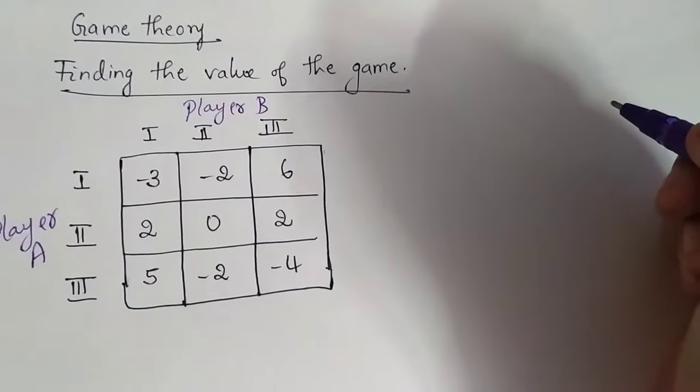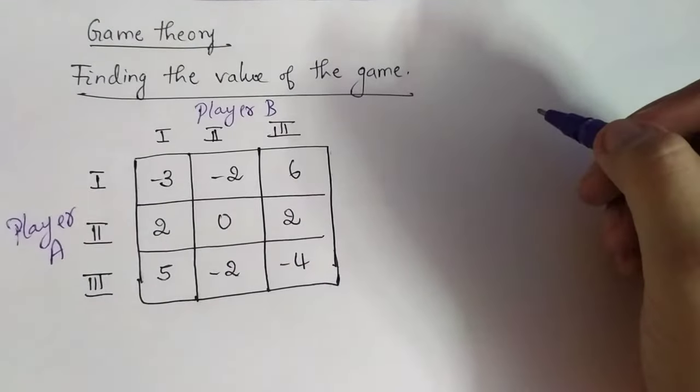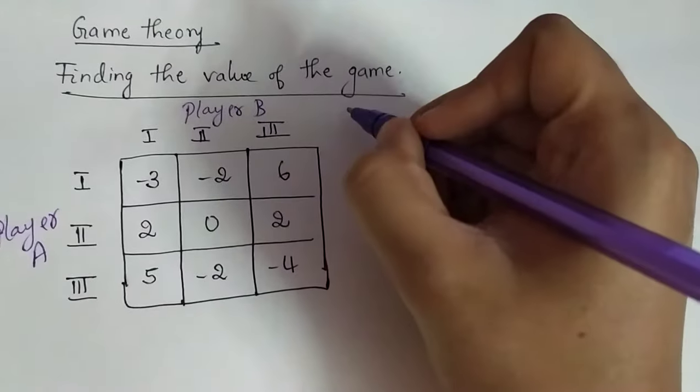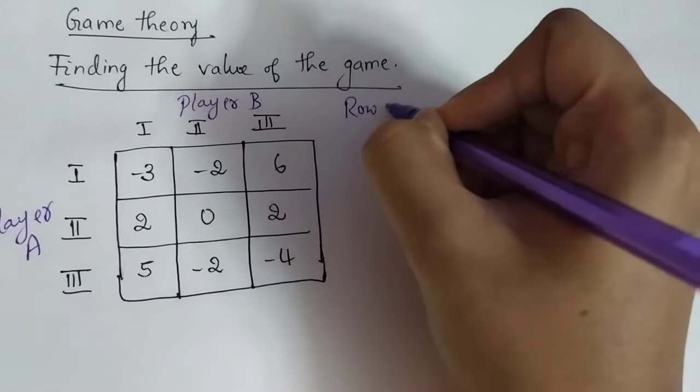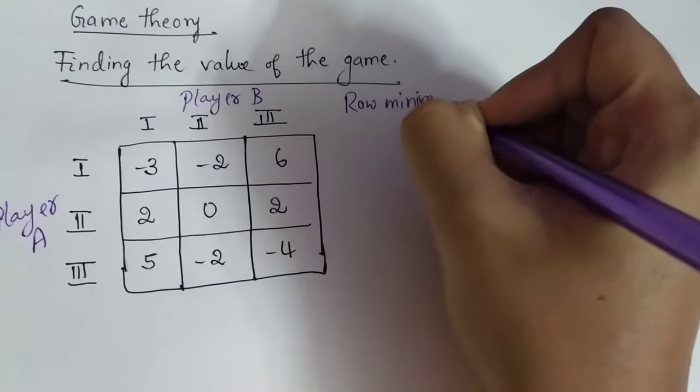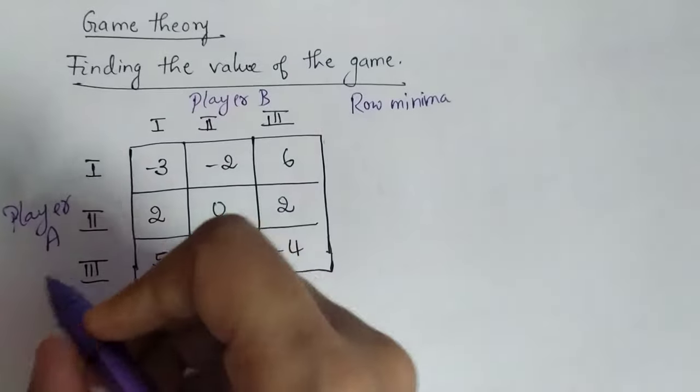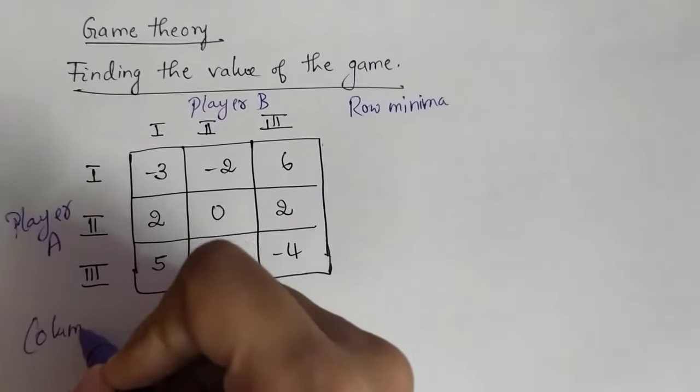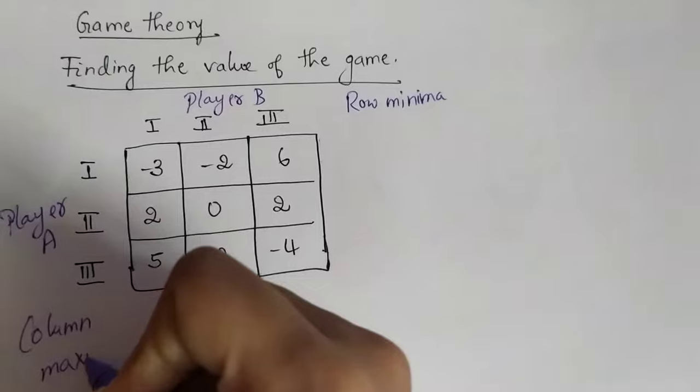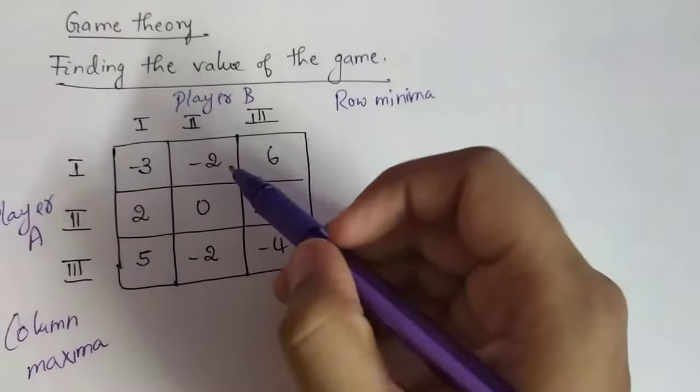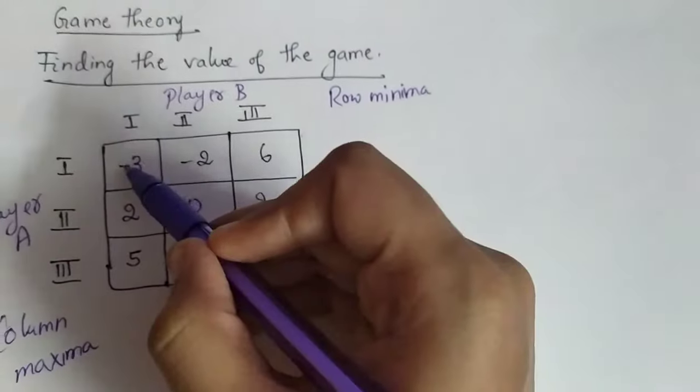Now what is the first step you have to do in finding the value of the game? You'll have to consider the row minima, and here you'll have to consider the column maxima.